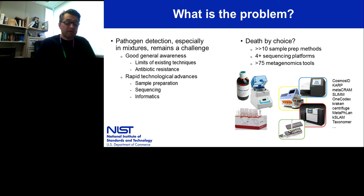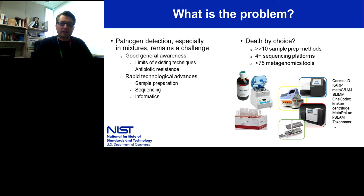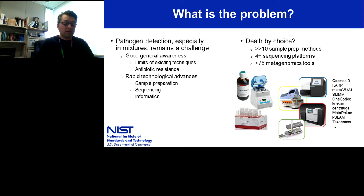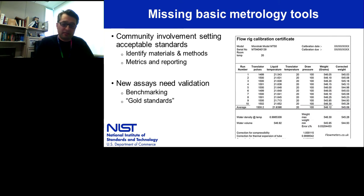However, it may be that the plethora of choices available to researchers have created something of an unintended problem. Do we have too many choices? There are a myriad of sample preparation methods, sequencers, and computational algorithms to help us analyze our samples and data, but selecting one combination that's appropriate, good, much less best, can be a real challenge. We're lacking materials and methods to help validate, compare, and consensify these new tools globally.